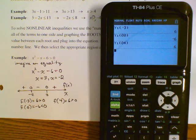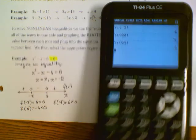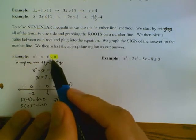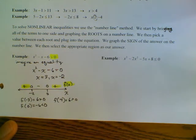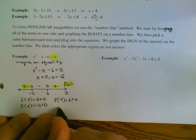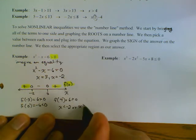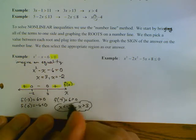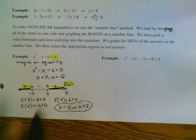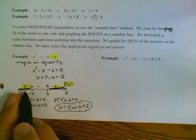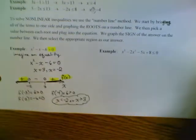The inequality asks when the quadratic is greater than zero — when f(x) is positive. Looking at the number line, f(x) is positive when x is less than negative 2 or when x is greater than 3. We use 'or' here because it's a disjunction — we can't say it's less than negative 2 and also greater than 3 at the same time.